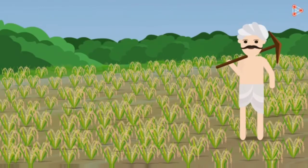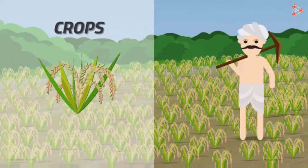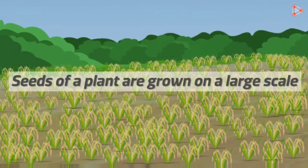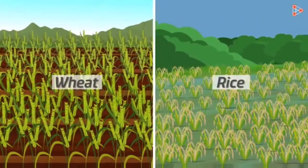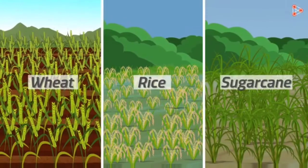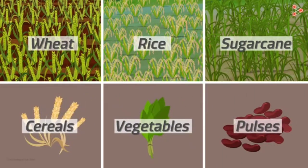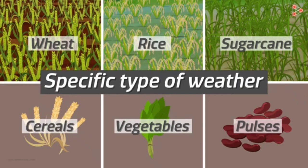What is the most important component in agriculture? Of course, the crops! When seeds of a plant are grown on a large scale, we call it a crop. Crops of wheat, rice, or sugar cane can be grown on a piece of land. Crops can be of cereals, vegetables, or pulses, but each crop needs a specific type of weather. Crops are therefore classified based on the season they are grown in.